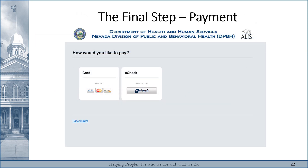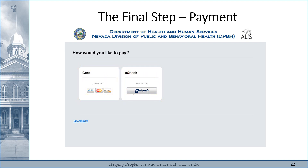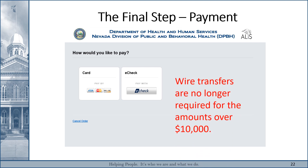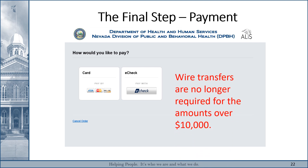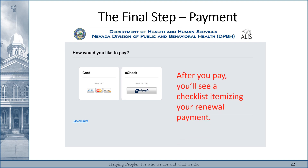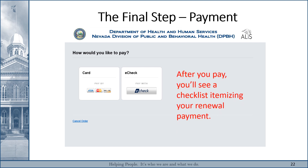Once you've submitted the application, the last step will be to pay your fee. You can use any of the options listed under Credit Cards or E-Check. As a side note, wire transfers are no longer required for amounts over $10,000. After you pay, you will see a screen similar to the previous one that contains a checklist itemizing your renewal payment.